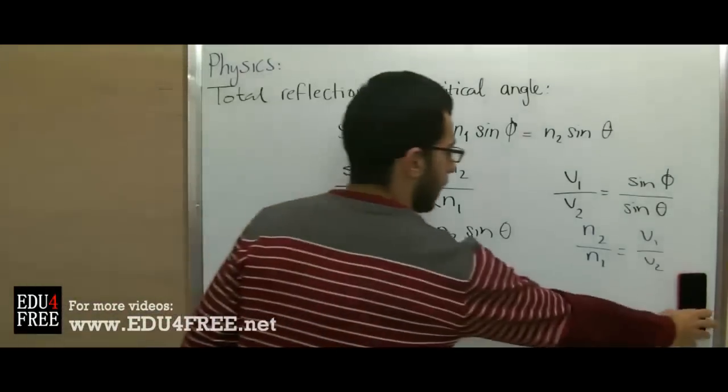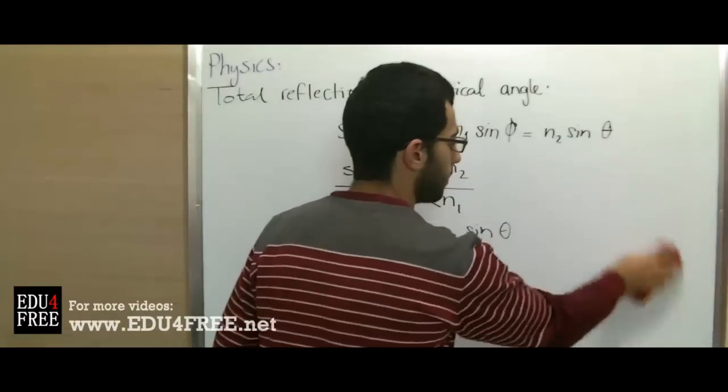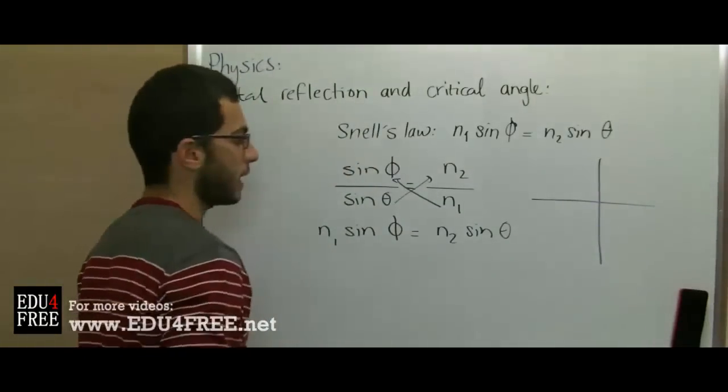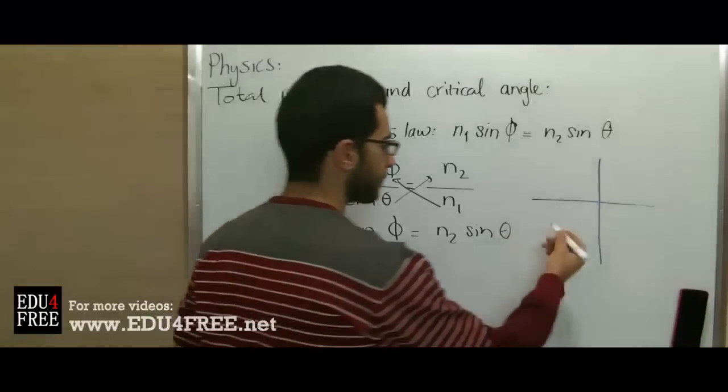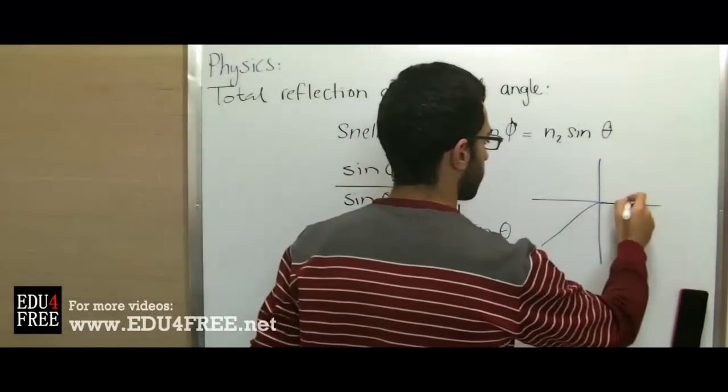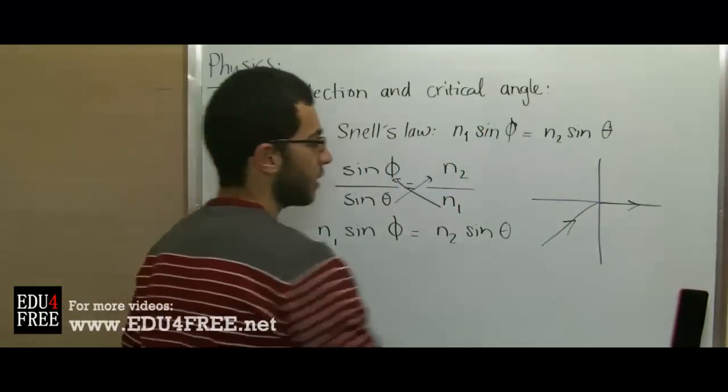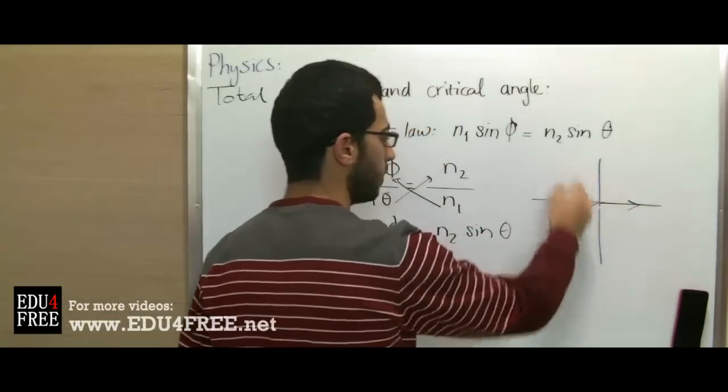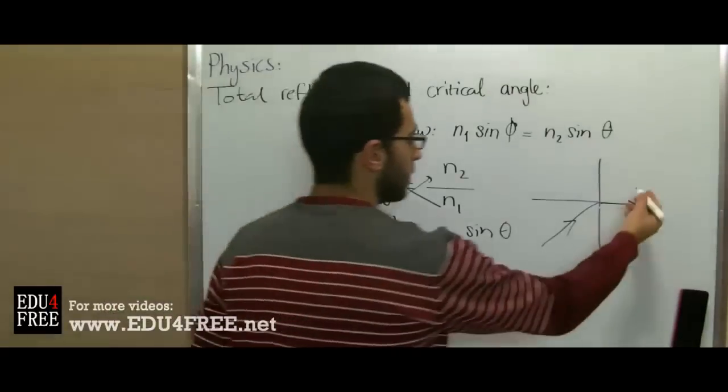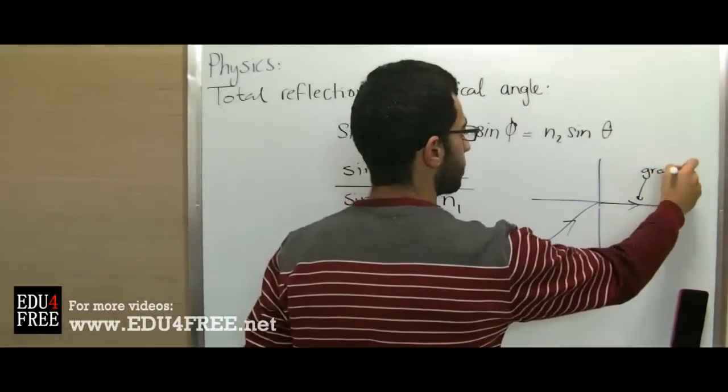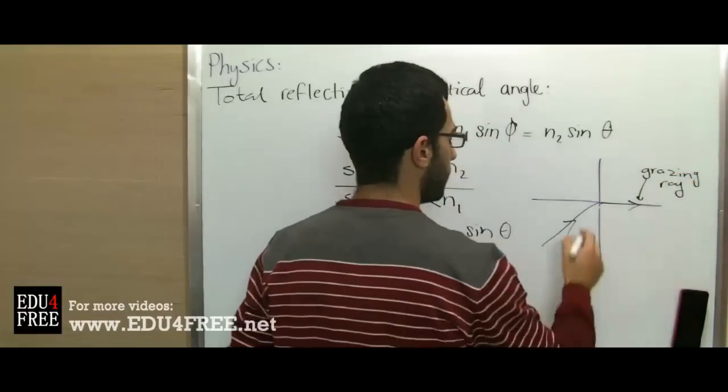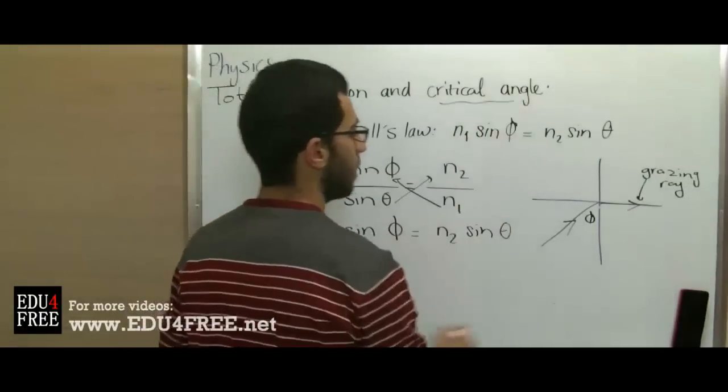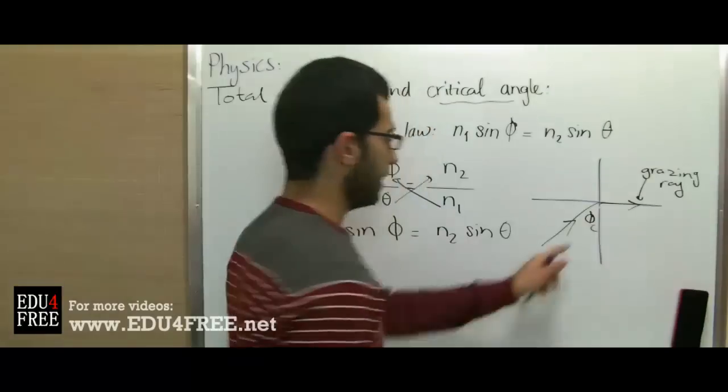In some situations, when light refracts from one medium to another, the light ray becomes tangential to the surface of the second medium or the separating plane between the two mediums. At that time, this ray is called a grazing ray, and the angle of incidence is called the critical angle. We refer to it as φc, critical.